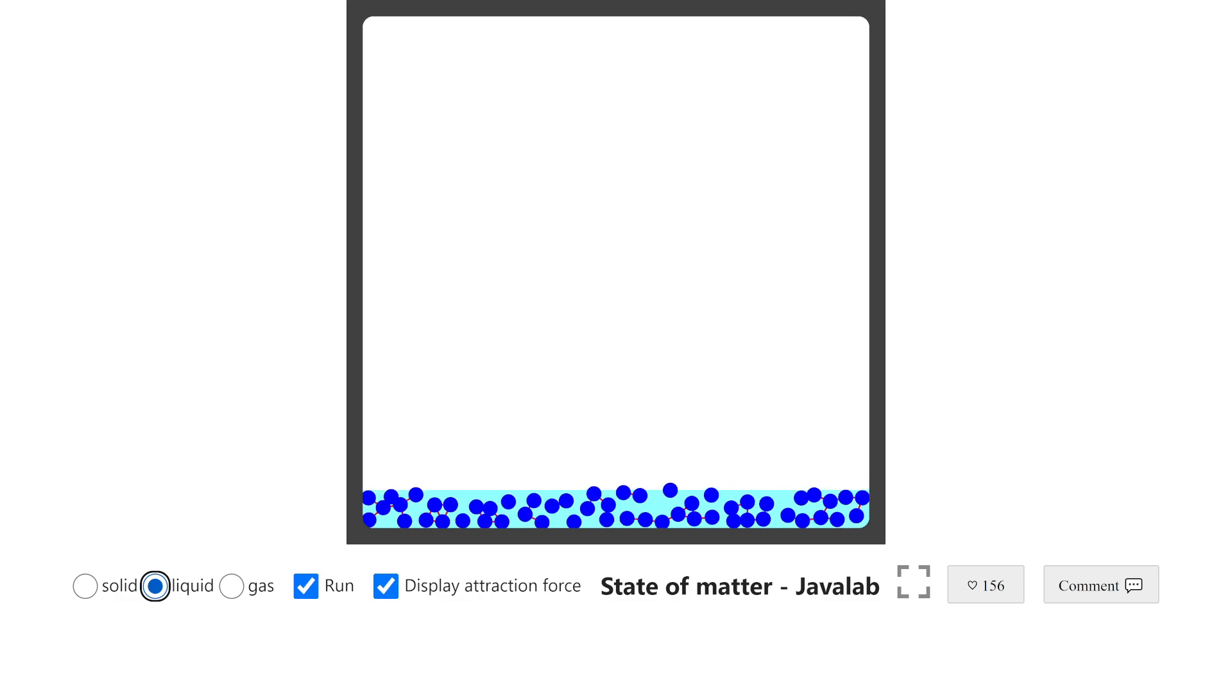Next, if we move to the liquid state, you can see our particles have random motion. But in solid state we don't have random motion. The red color lines are showing forces of attraction, and the forces of attraction in liquids are weaker as compared to solids.